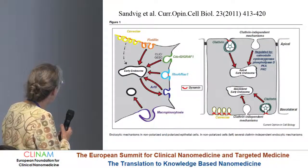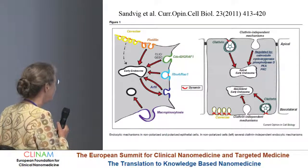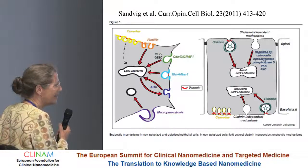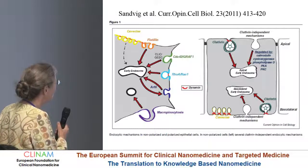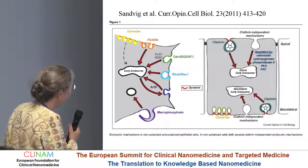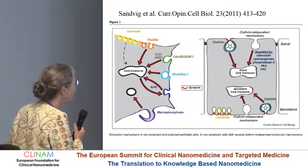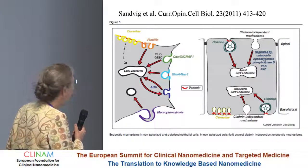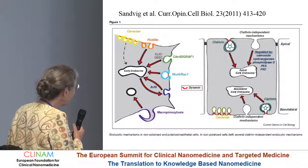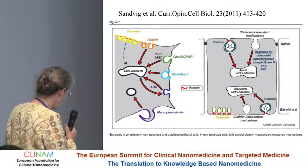If you look at the different mechanisms in a non-polarized cell, which is something we often do, it can be quite different from a real polarized cell. It can be an epithelial or endothelial cell, where it turns out that clathrin-independent mechanisms on the apical and the basolateral side are differentially regulated. For instance, caveoli can be found on only one side in some cases. So that's very different from just looking at the non-polarized version.